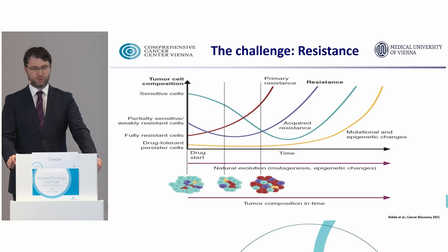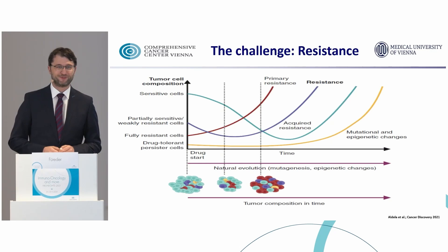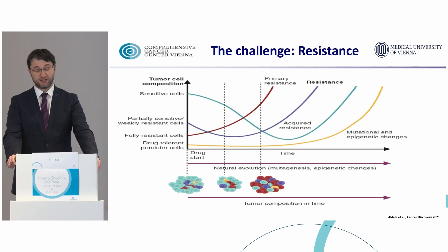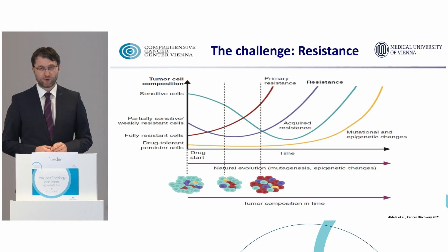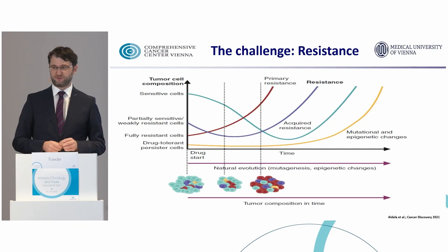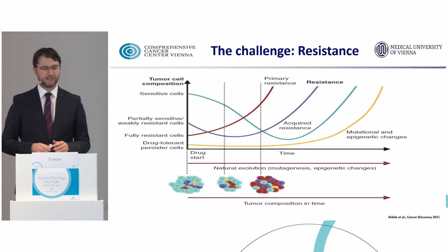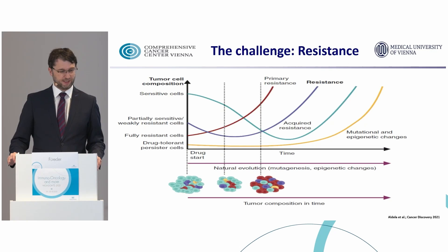Why is there even a need to combine checkpoint inhibitors with tyrosine kinase inhibitors? In theory, the concept of checkpoint inhibition — PD-1 or CTLA-4 inhibitors — is approved in daily clinical practice. They usually work, but in fact they work only in a minority of patients. Depending on the tumor type, we have about 20–25% response rate when using immunotherapy as a single agent. The duration of response — if it works, it works quite well — but unfortunately it does not always work.